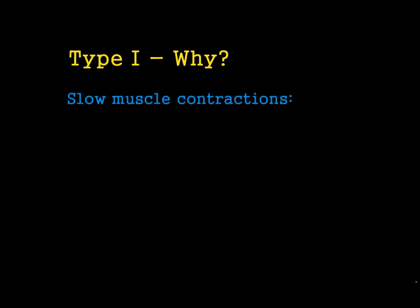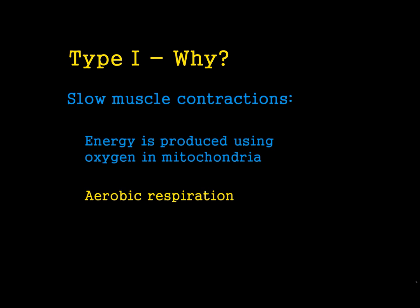In order to achieve merit and distinction criteria, we need to be able to explain why these basics are in place. The first question is: why is it that Type 1 muscle fibres are very slow at contracting? This is because Type 1 muscle fibres use mitochondria to produce their energy. They turn oxygen into energy, and this process is called aerobic respiration.